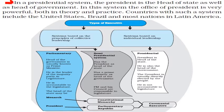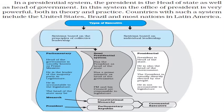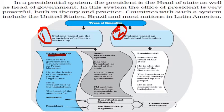In a presidential system, the president is both head of state and head of government, meaning the president holds real power both in theory and in practice. Countries with such a system include the United States, Brazil, and most nations in Latin America. To sum up: the types of executive can be grouped as those based on collective leadership — the parliamentary and semi-presidential forms — and those based on individual leadership.